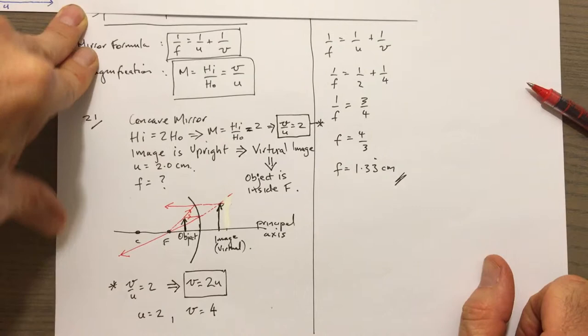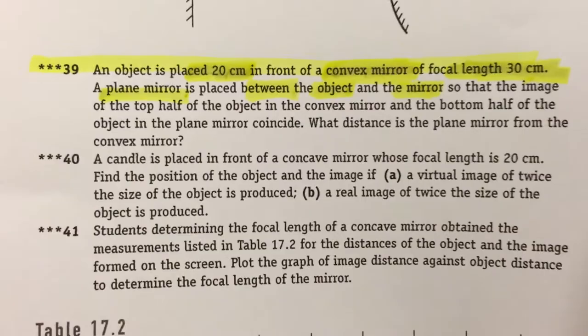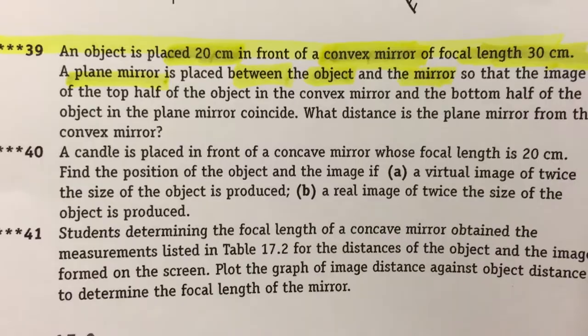Let's do one more. Now we're going to look at question 39. We have an object 20 centimetres in front of a convex mirror with a focal length of 30 centimetres.